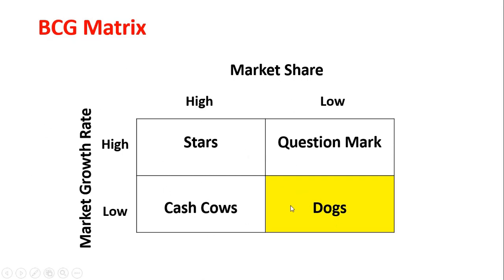By analyzing the BCG matrix we can conclude whether the business is performing well or not, and where it is actually located — in Cash Cows, Stars, Question Marks, or Dogs. This is all about the BCG matrix. Thank you very much for watching this video. If you have any further questions, the comment section is open for you.